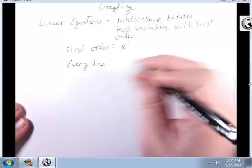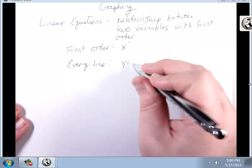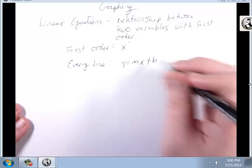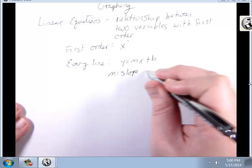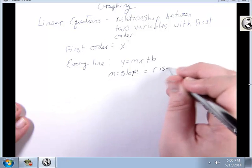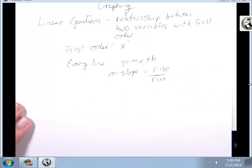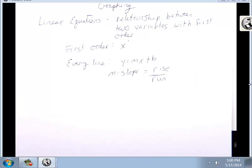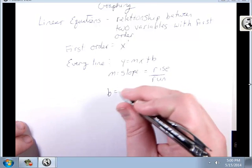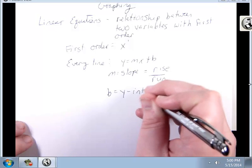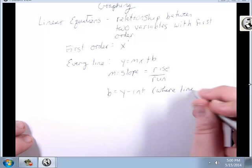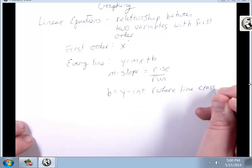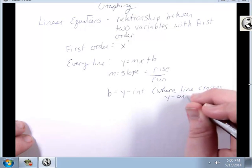Every line follows y equals mx plus b. m is the slope, which is rise over run. b is the y-intercept, where the line crosses the y-axis.